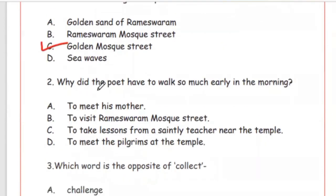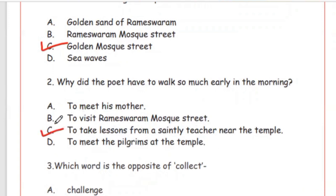Question 2: Why did the poet have to walk so much early in the morning? Options: to meet his mother, to visit Rameshwaram Mosque Street, to take lessons from a saintly teacher near the temple, to meet the pilgrims. The right answer is Option C — he used to go to a priest near the temple for his studies, and that is why he had to walk so much in the morning.